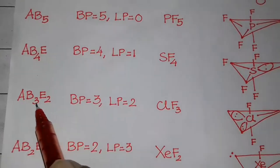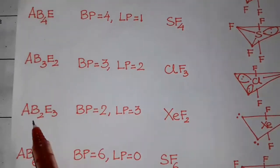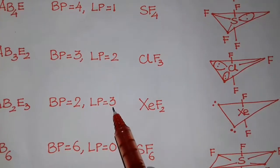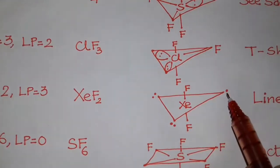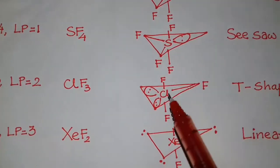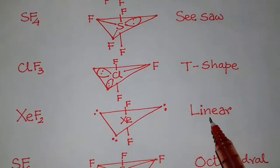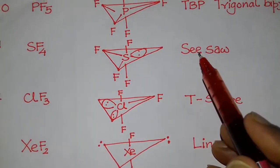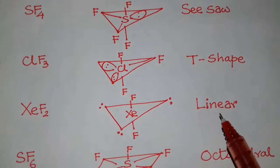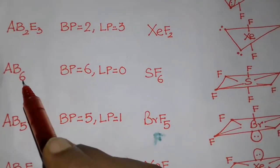In the case of ClF3 (AB3E2), lone pair is 2, placed in equatorial. Again, in AB2E3 — XeF2 — lone pair is 3 for H value equal to 5, and again lone pairs are placed in the equatorial positions: one, two, then three lone pairs in equatorial. Shape is linear. So the progression is: TBP to seesaw, then TBP to T-shape, and last TBP to linear.